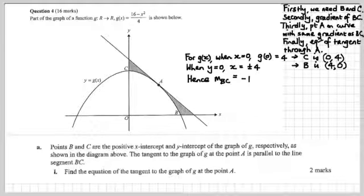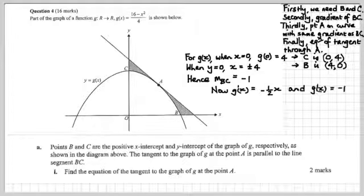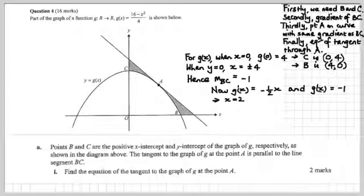Hence the gradient of BC — rise over run — is going to be minus 1. Now here's the rule for the gradient function of g(x): g'(x) is going to be minus one-half x. But we know that minus one-half of x equals minus 1. So now we can get x — therefore x is 2.